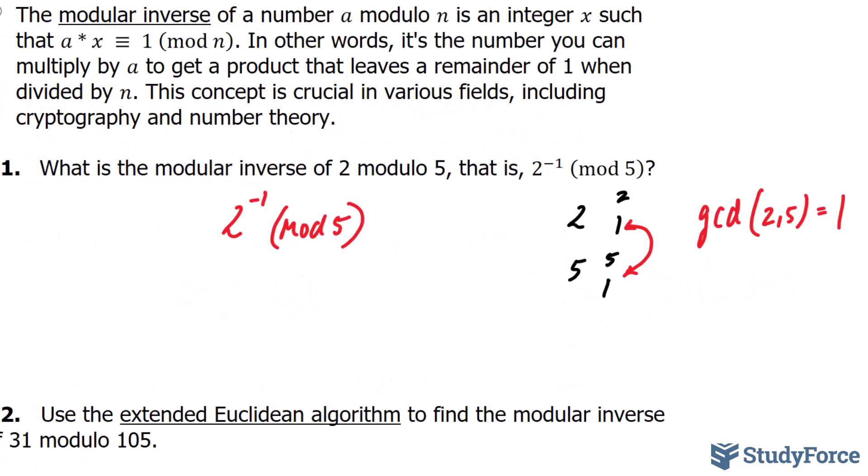Now that we know a modular inverse exists, we're going to take the number 2 and multiply it by some number x, and it should be congruent, which is represented by these three lines, to 1 mod 5. In other words, we're looking for number x, that when multiplied to 2, its product, when divided by 5, gives us a remainder of 1.